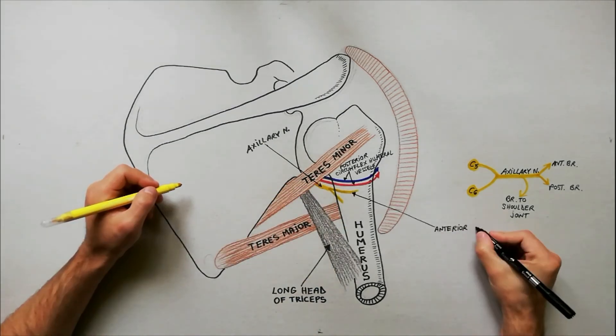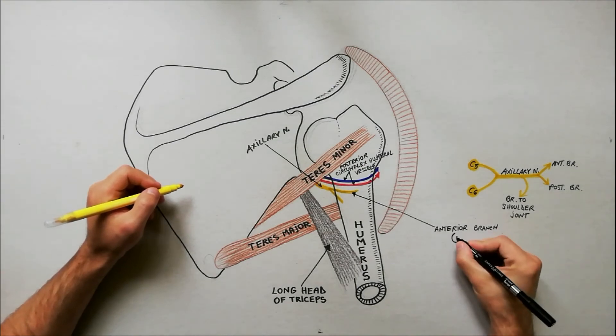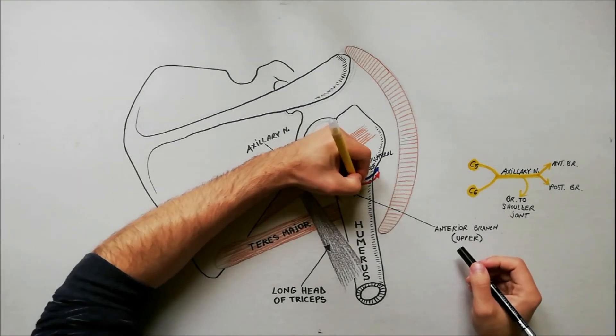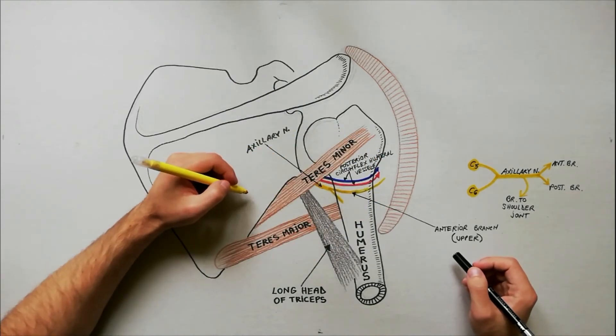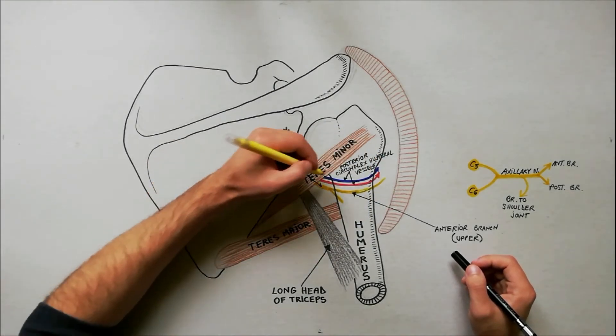The anterior branch, or upper branch, continues horizontally with posterior circumflex humeral vessels around the posterior aspect of surgical neck of humerus.